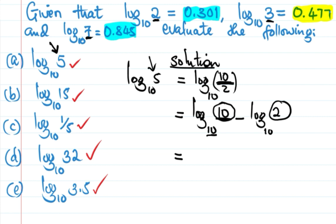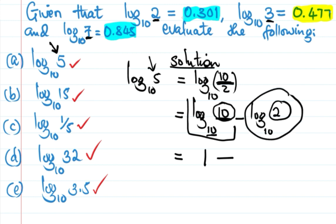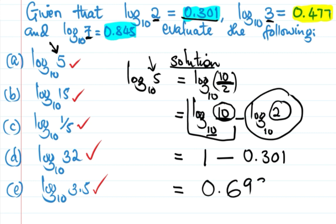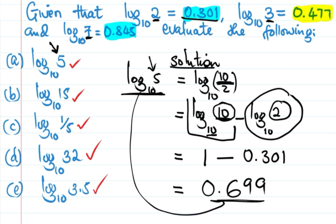You can refer to my previous video on laws of logarithm for that rule. So we have 1 minus log 2, which is 1 minus 0.301, giving us 0.699. So log 5 base 10 equals 0.699. We are done with that.